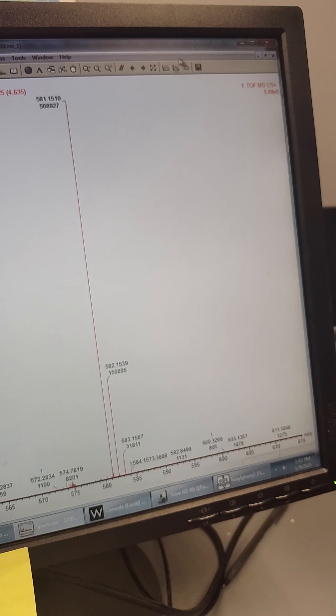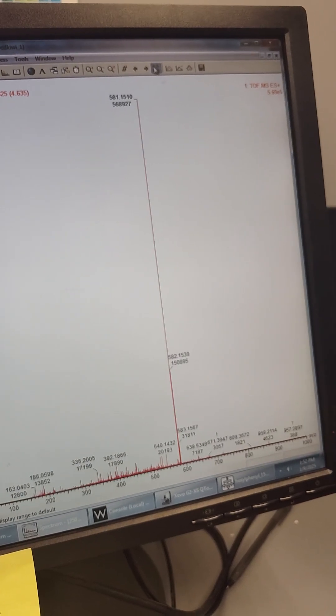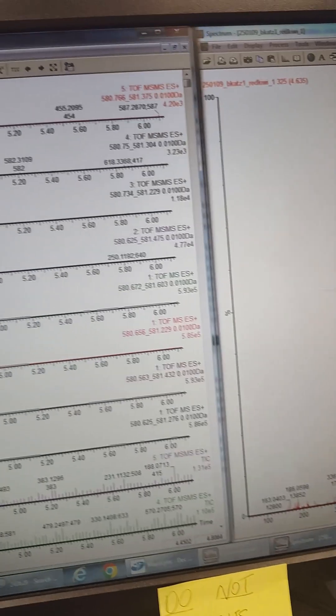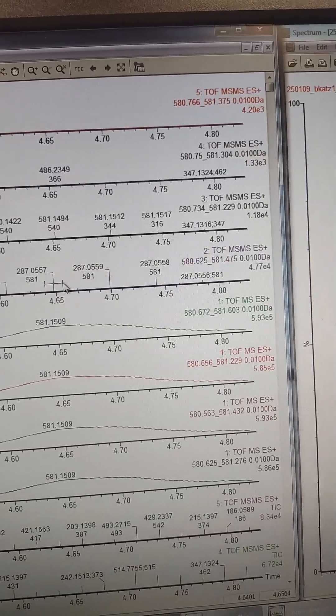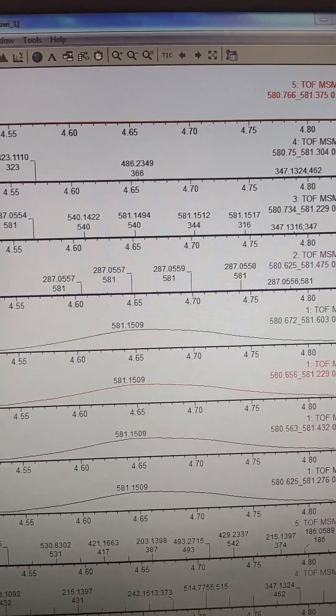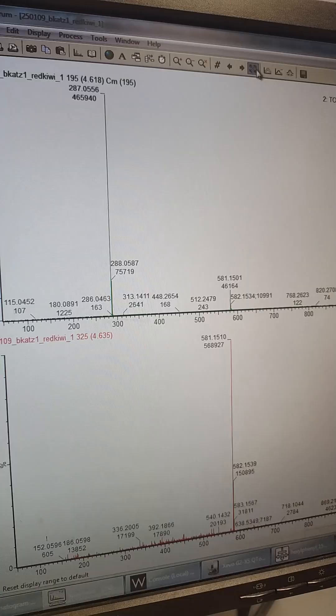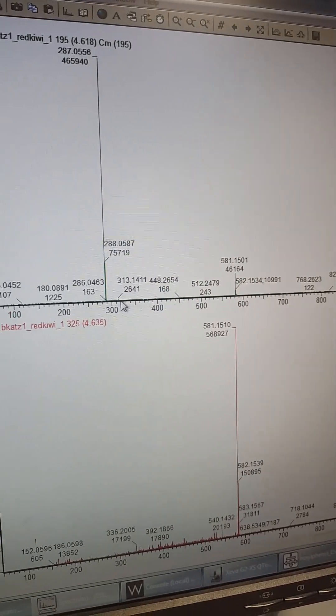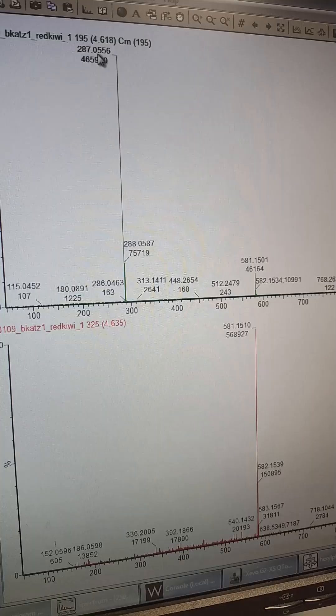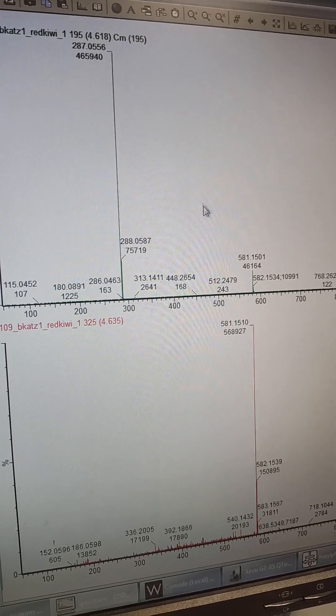So then if we go ahead and look at just the MS1 data here. There's that 580. So this one's saying it's 580.1.1. That does look singly charged. So then we're going to go in and we're going to find that same fragment right there. And it is breaking like an anthocyanin.